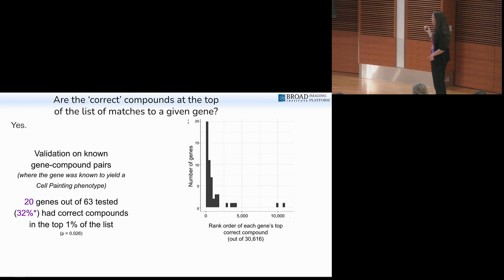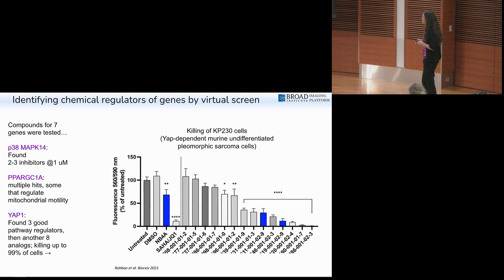We had around 30,000 compounds. Roughly half had a phenotype we could use for matching. What we found with control genes - we took known gene compound pairs where a particular gene was known to yield a cell painting phenotype and there were certain compounds that target that gene's product. We found out of the controls roughly 32% of the genes had the correct compounds at the top of the rank ordered list of matches. We're pretty excited about that. Of course we wish it was 100%, but if you can use this virtual query, you can save a pharma company screening a million compounds.